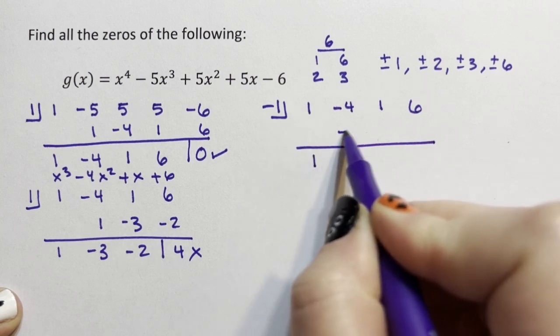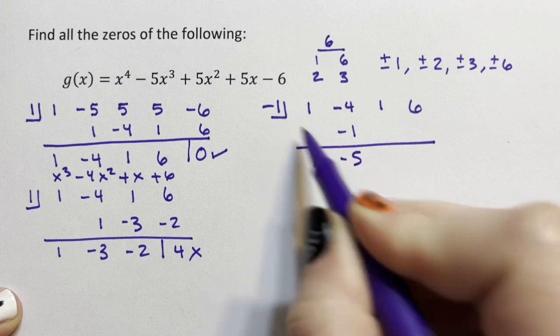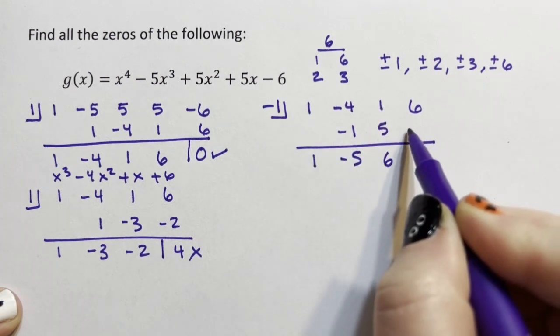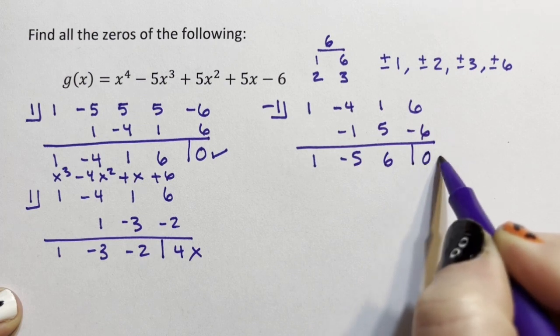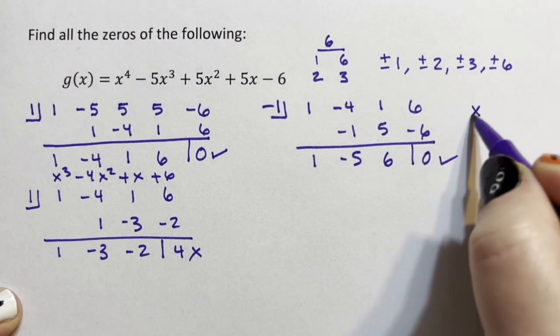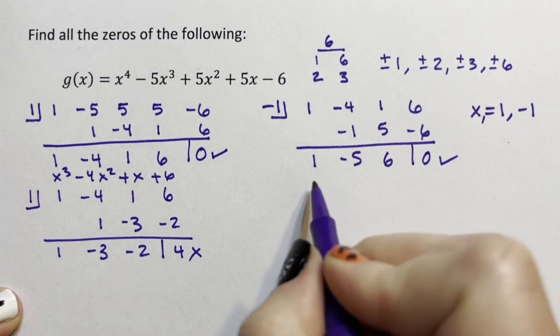1, -1, add down. These multiply to be a positive 5. These add down to be 6, -6, that's 0. So so far we have figured out that 1 and -1 are zeros.